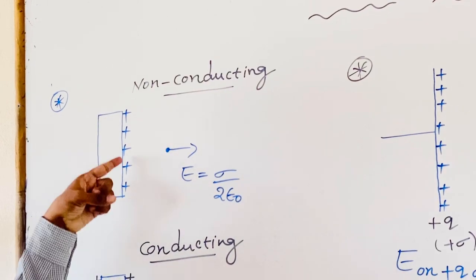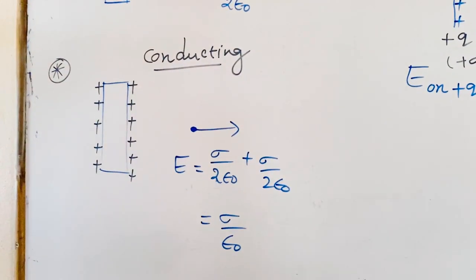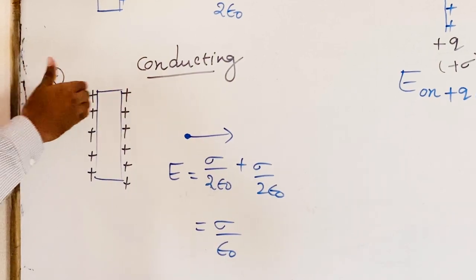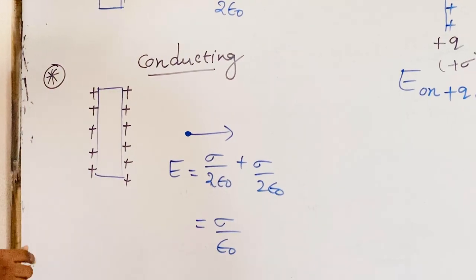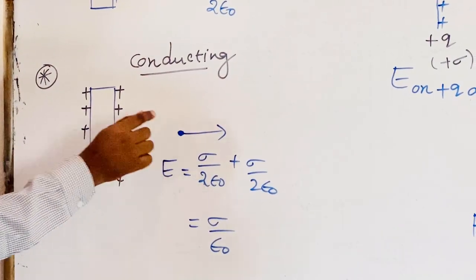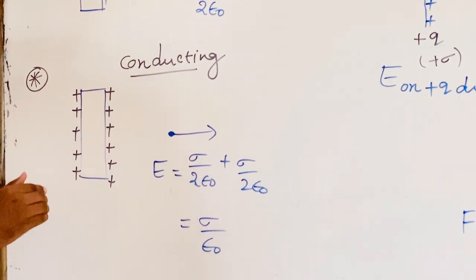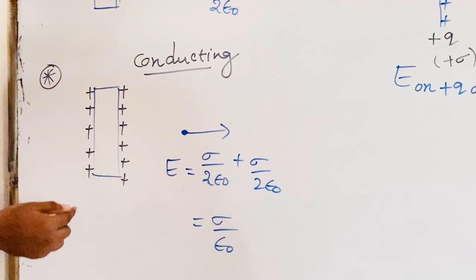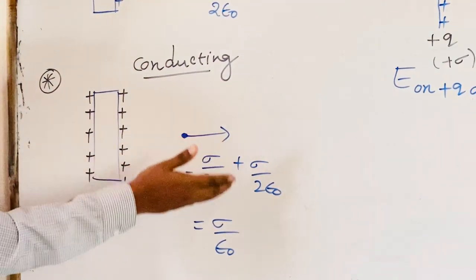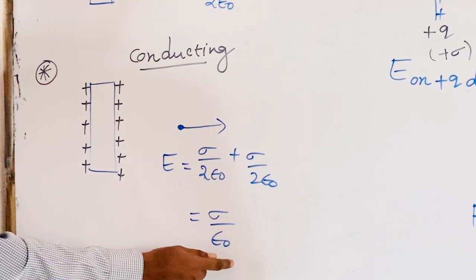Here sigma is surface charge density. Similarly, if you take a conducting sheet of charge, any excess positive charge given distributes on the two sides of the sheet. The conducting sheet can be assumed as equivalent to two non-conducting sheets of charge. Each one creates a field sigma by epsilon naught in the rightward direction, and the superposition of these two fields gives sigma by epsilon naught.